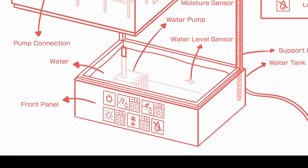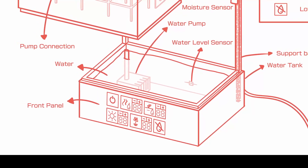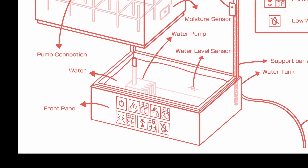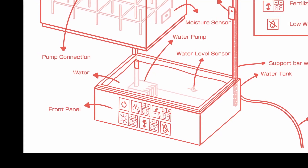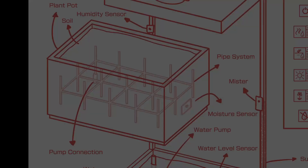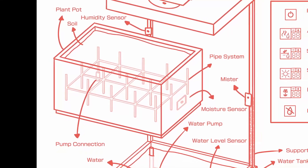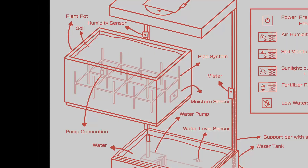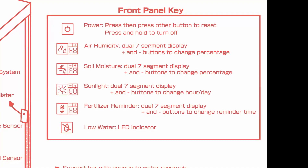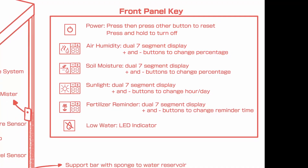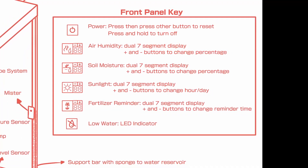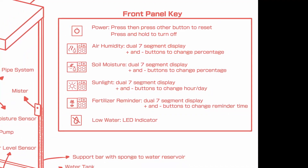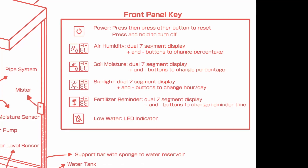The pot is composed of a water reservoir where liquid fertilizer can be added and injected into the soil to reach the set moisture level. The plants grow within a clear case, controlling humidity with the accompanying mister. The specifics of your plant can be set via the control panel, and it will even inform you if the water reservoir is low or if more fertilizer is needed.